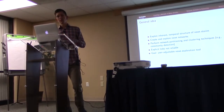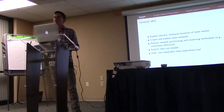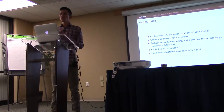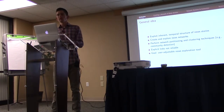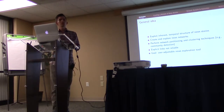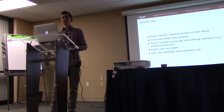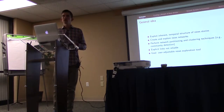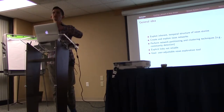From this follows our general idea. We want to explore the inherent temporal structure of news stories to create and explore news networks. Once we have done this, we will perform network partitioning, graph partitioning, and clustering techniques to work with the network. We will also show you why we don't just use explicit links or hyperlinks present within news articles — these explicit links are not reliable and don't cover quite a lot of articles. The final goal is to have a user-adjustable news exploration tool so that if you're reading one article, you can browse back the history of articles and see how the topic evolved.